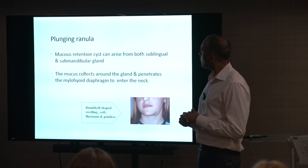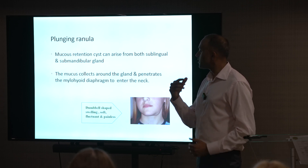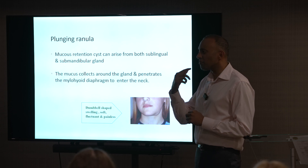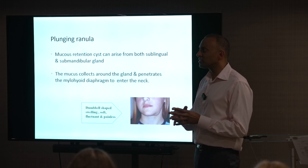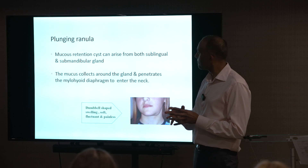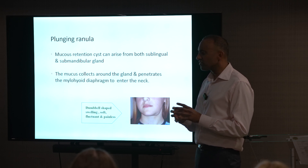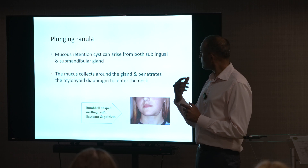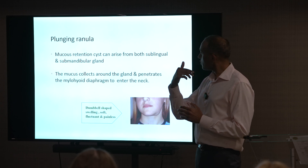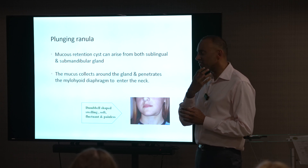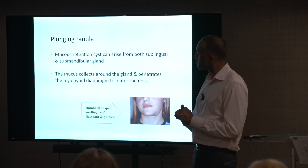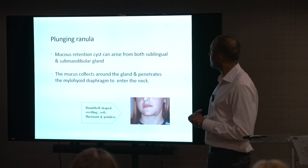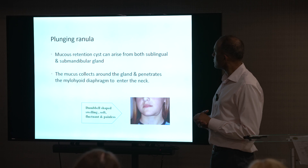Worth mentioning also is plunging ranula. You don't see it very often. Usually you'll see small ranulas in the floor of mouth, which are really extravasation of mucus and saliva from the sublingual gland. But sometimes they can go through the mylohyoid and present as lumps in the neck. Ultrasound is useful to differentiate this.